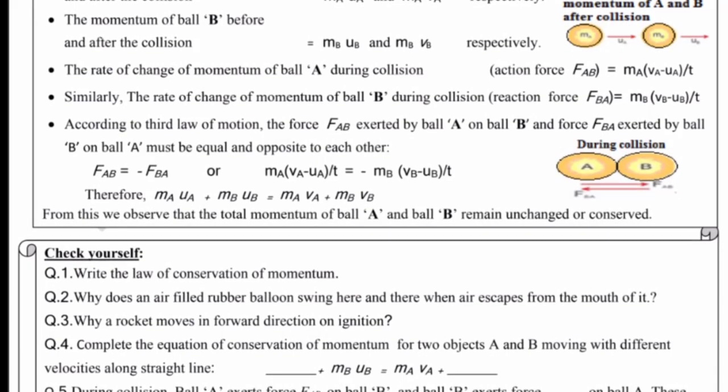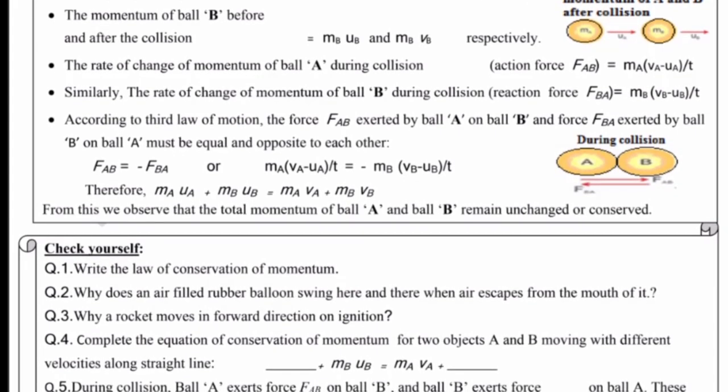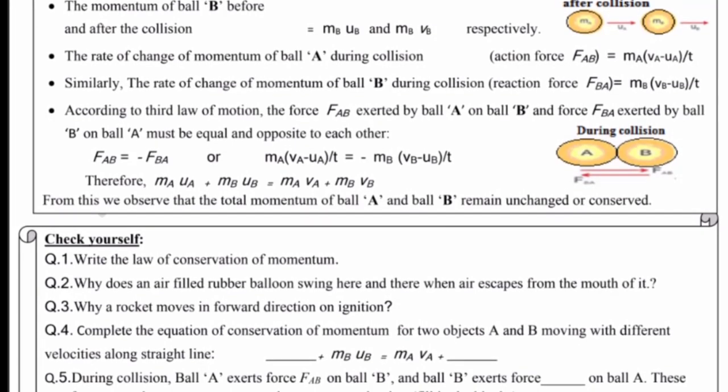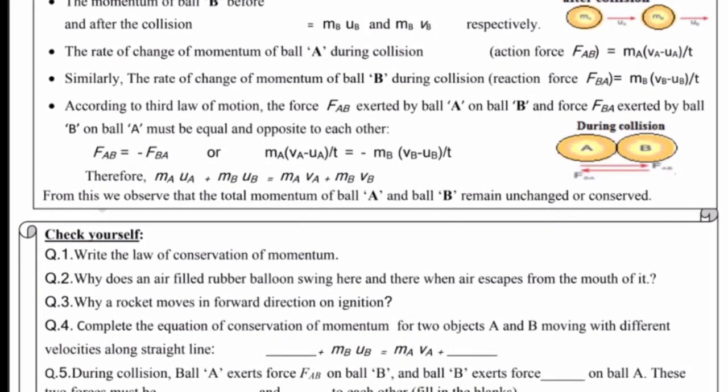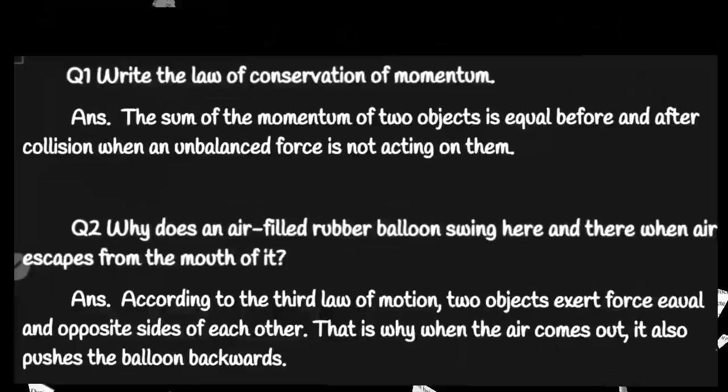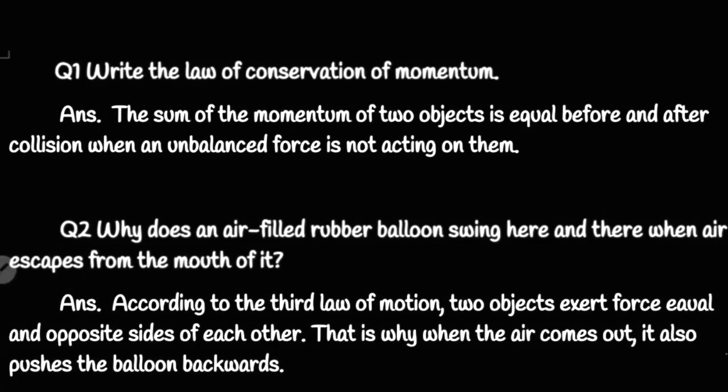From this we observe that the total momentum of ball A and ball B remain unchanged or conserved. So let's discuss questions. Write the law of conservation of momentum: The sum of the momentum of two objects is equal before and after collision when unbalanced force is not acting on them.